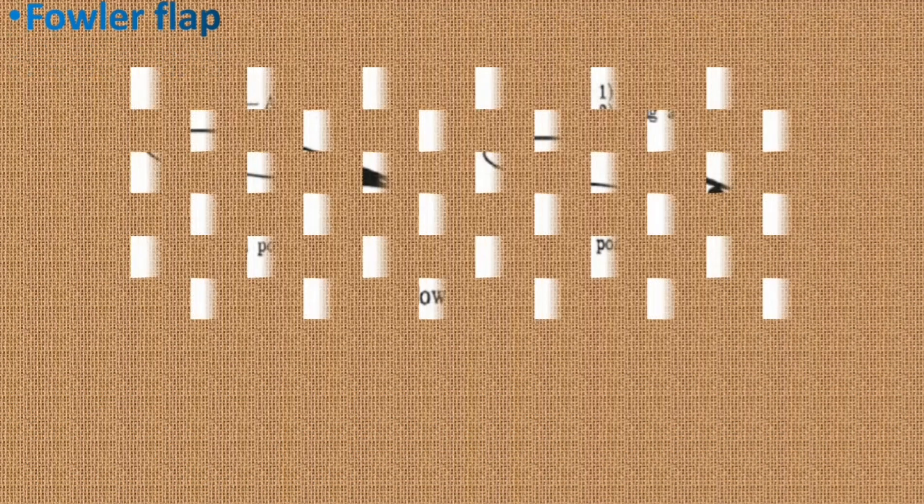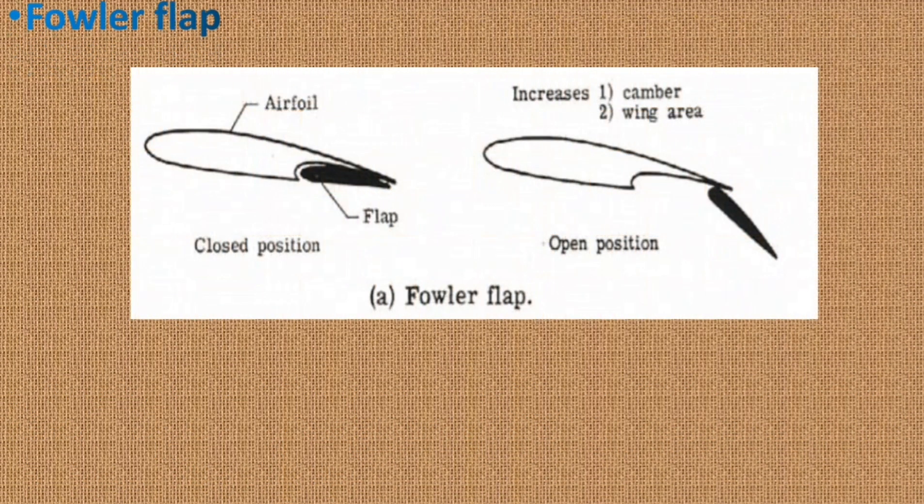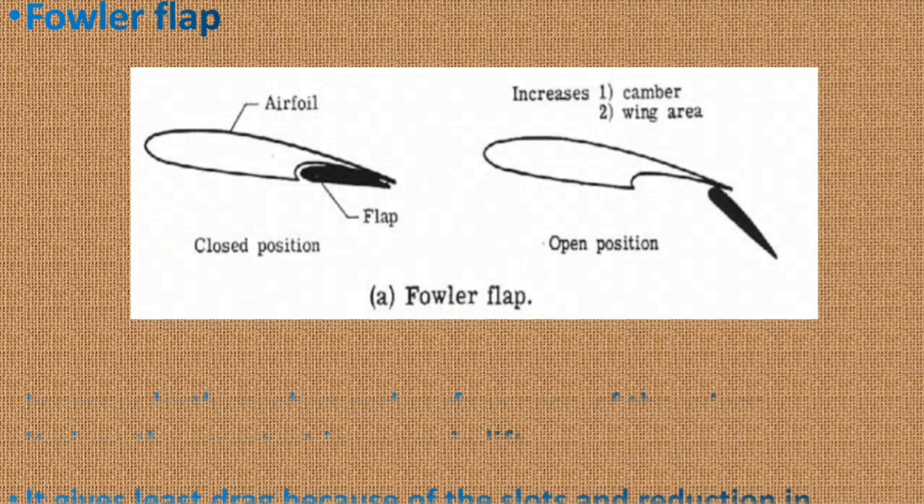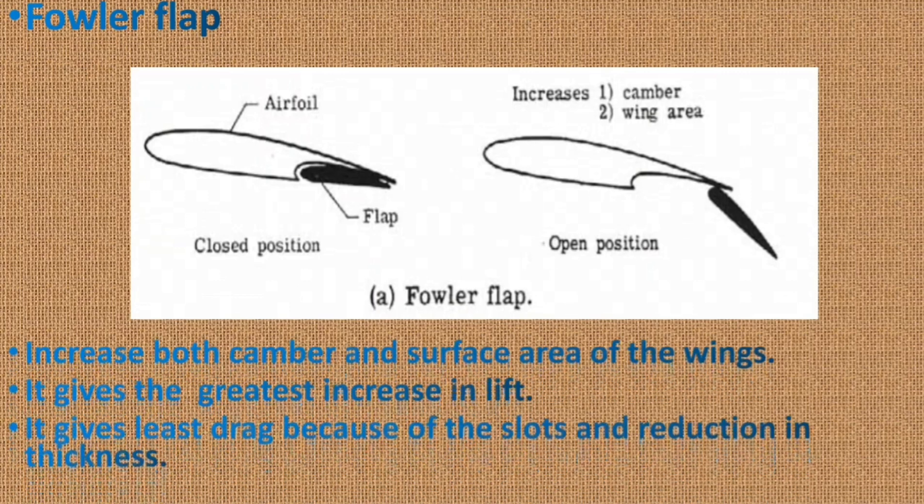Fowler flap. It is a split flap that slides rearward level for a distance prior to hinging downward. It thereby first increases chord and wing surface area and then increases camber. This produces a flap which can optimize both takeoff and landing performance. This flap gives the greatest increase in lift with least drag because of the slots and reduction in thickness. This type of flap or one of its variations are found on most large aircraft.